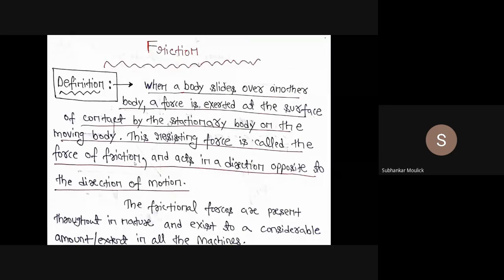If I am having any kind of rough surface, and on that rough surface a body is placed, and I want to move that body, then movement of the body is only possible if there is an opposing force against that moving body. That opposing force is nothing but the frictional force, which is generated due to the presence of irregularities or roughness on the surface on which the body is kept.